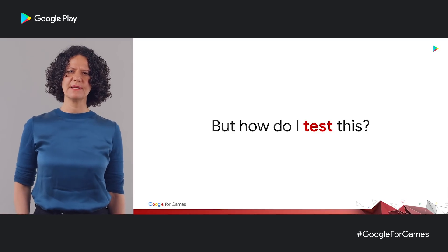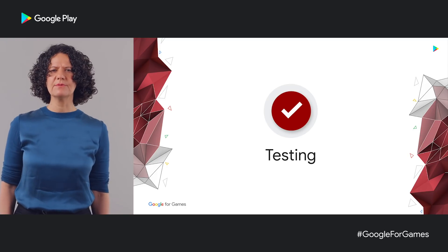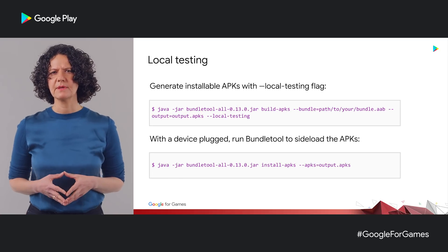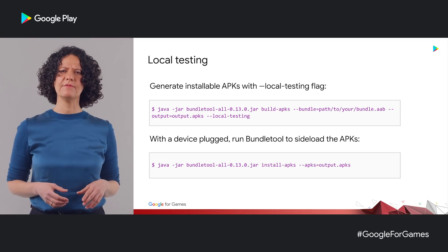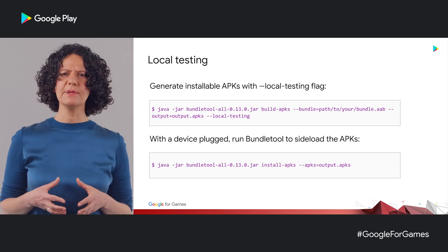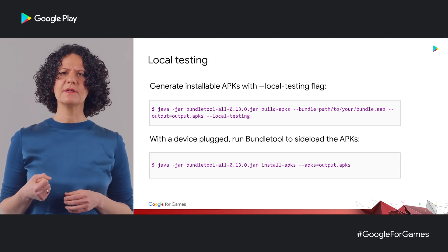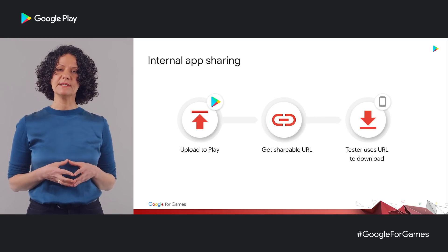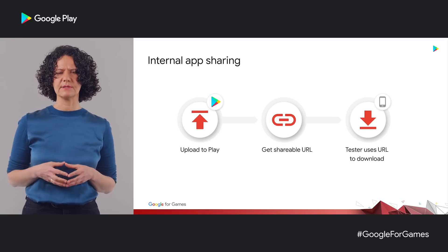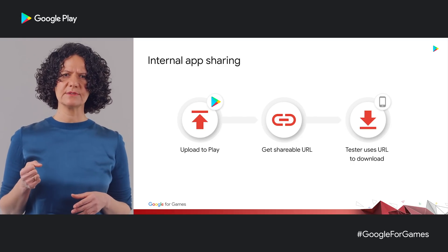Now that you see that you can indeed use Play Asset Delivery no matter which game engine you're using, you're probably wondering about testing. Before adopting PAD and releasing a new version that uses it, you will want to validate that everything works as expected and your game functions correctly. Early in the integration process, you probably want to test locally and validate the game interaction with the Play Core API. To do that, you can build the app in local testing mode using BundleTool. An app built with local testing mode will look for asset packs in a predefined local directory and simulate the download of the files as if they're originating from Play servers. As you get closer to having a release candidate, you will probably want to test your game as realistically as possible. To validate this, you can upload your test build to Play using internal app sharing and get a shareable link your testers can use to download the game from.